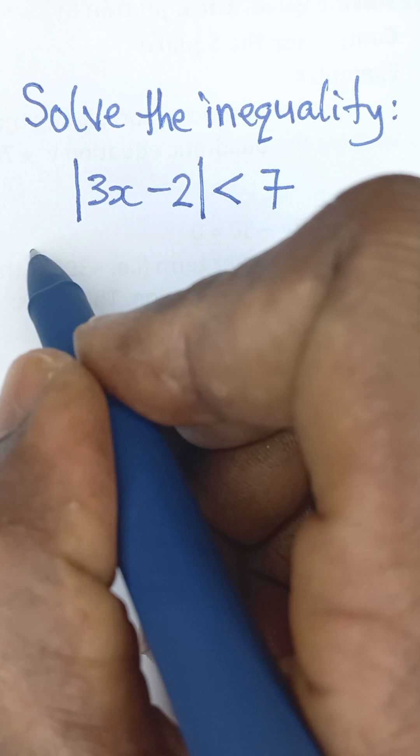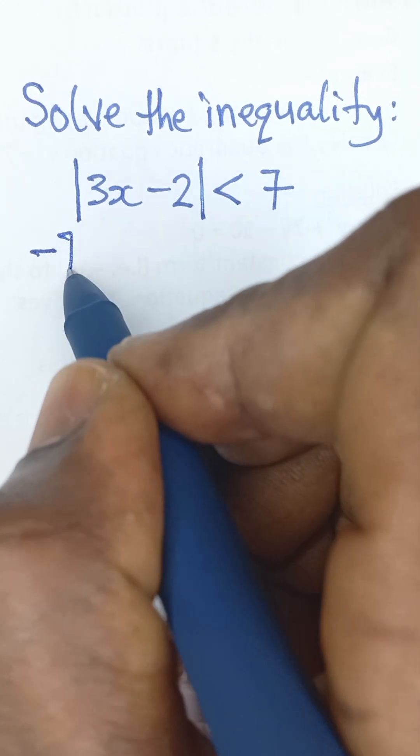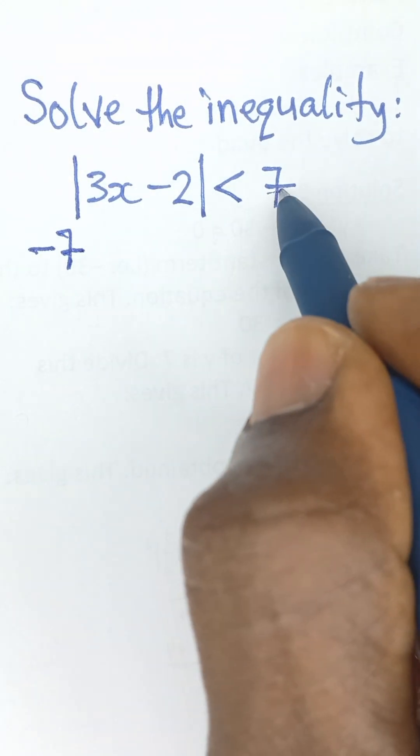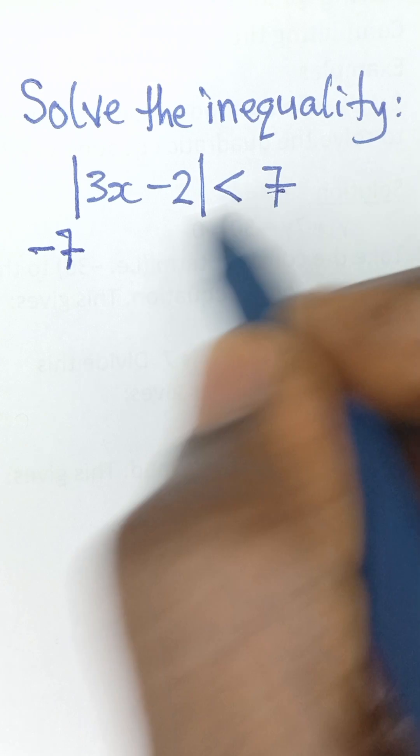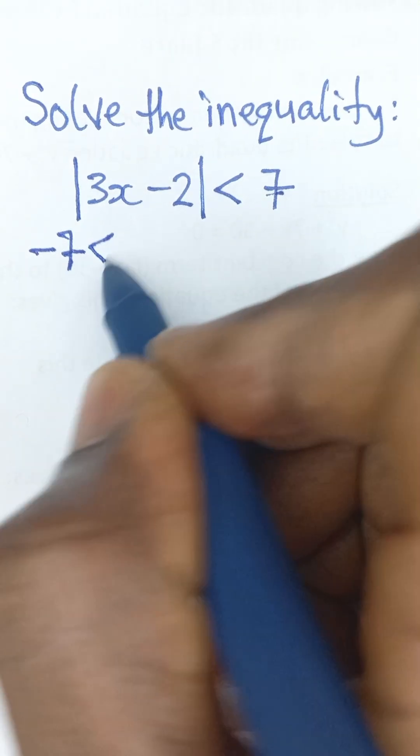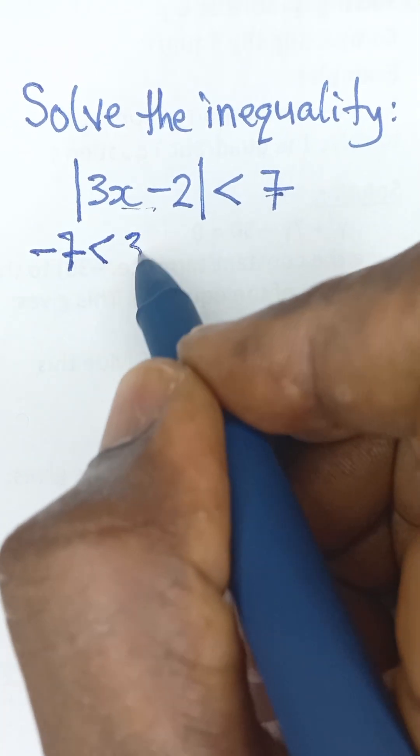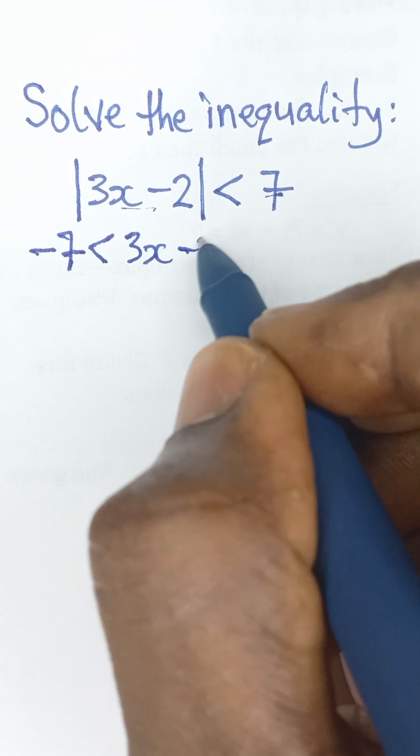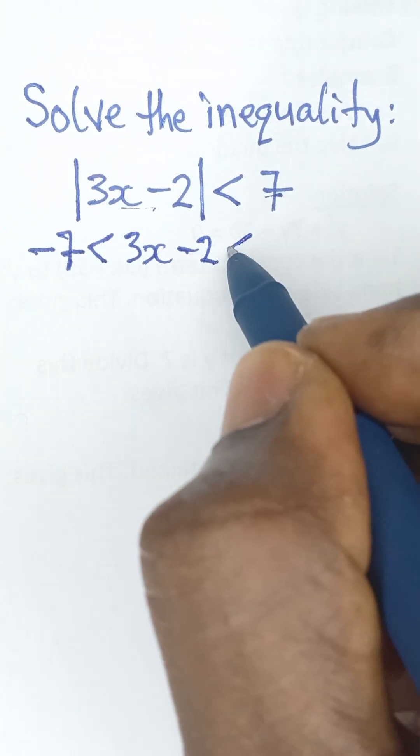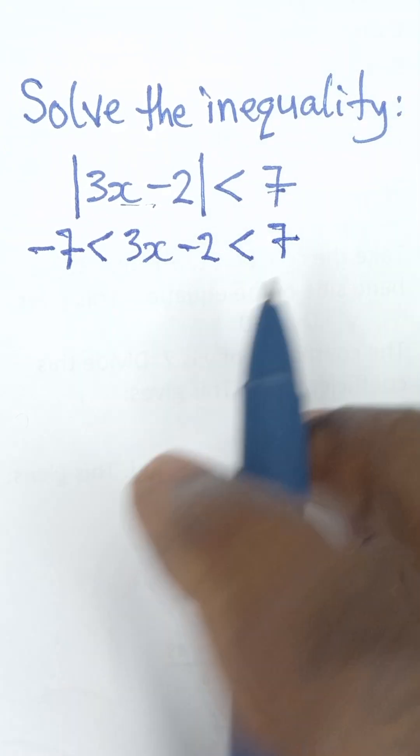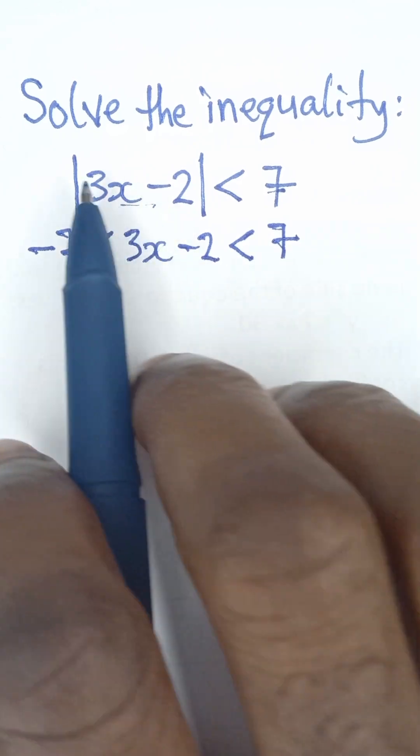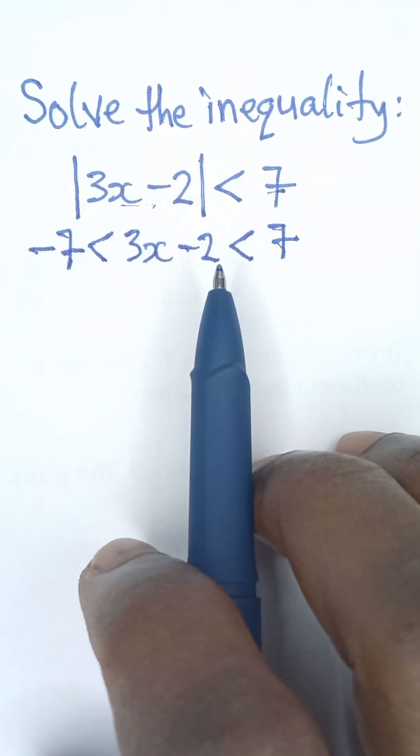So it becomes negative 7 here, and then this same sign you put it here, and then this value becomes 3x minus 2, and that is less than 7. So this is what you do in order to remove the absolute value sign.